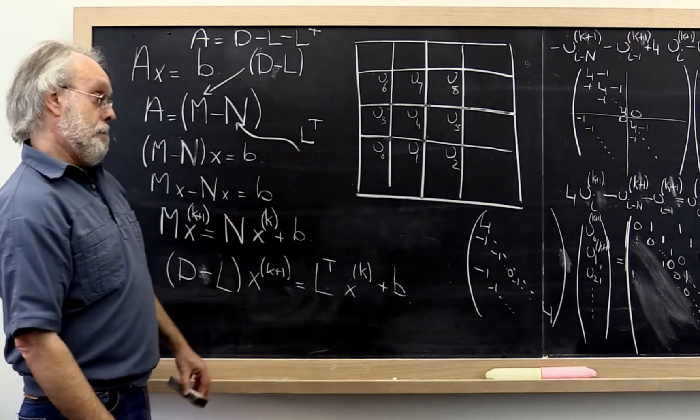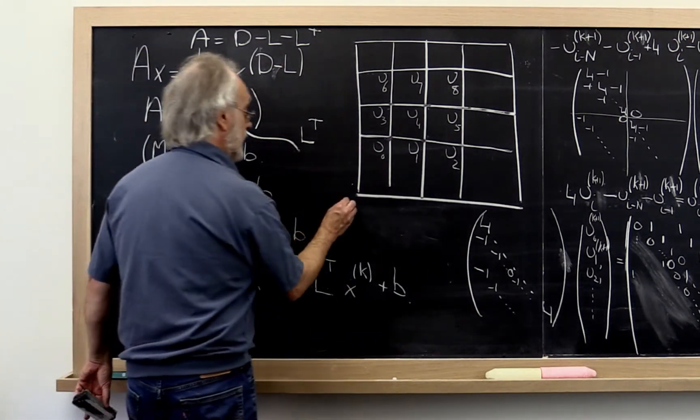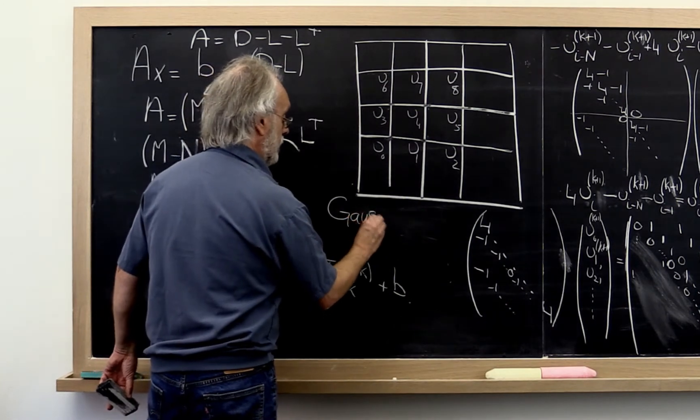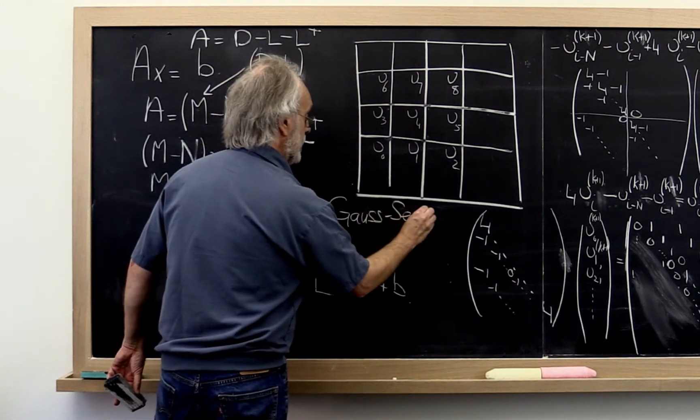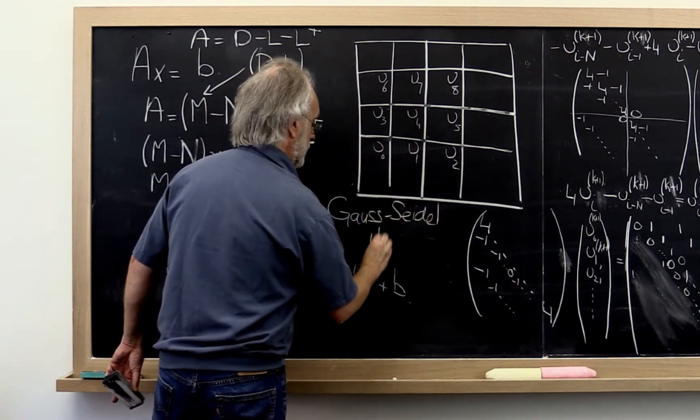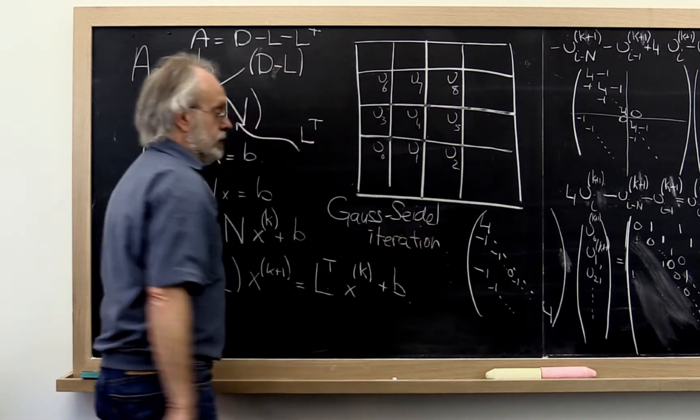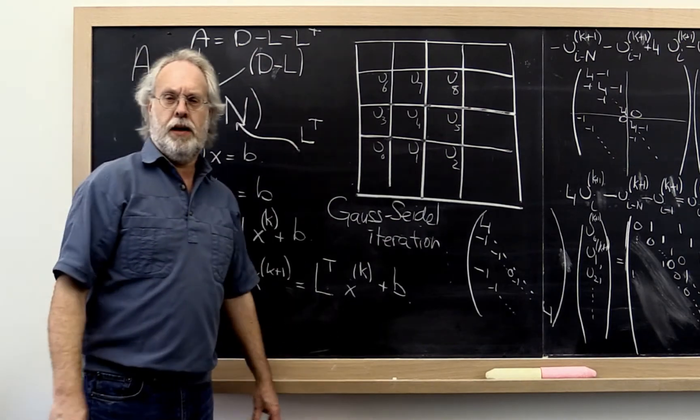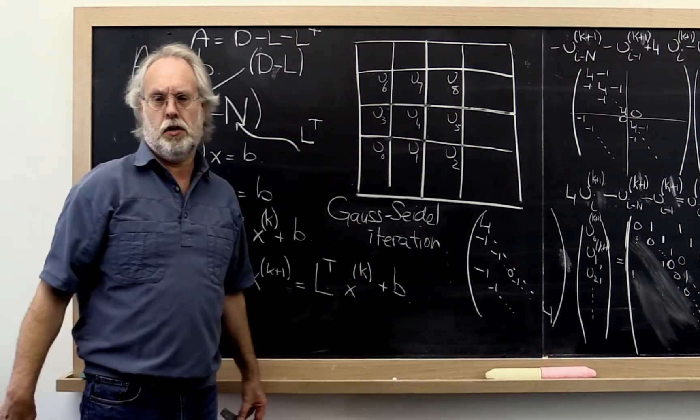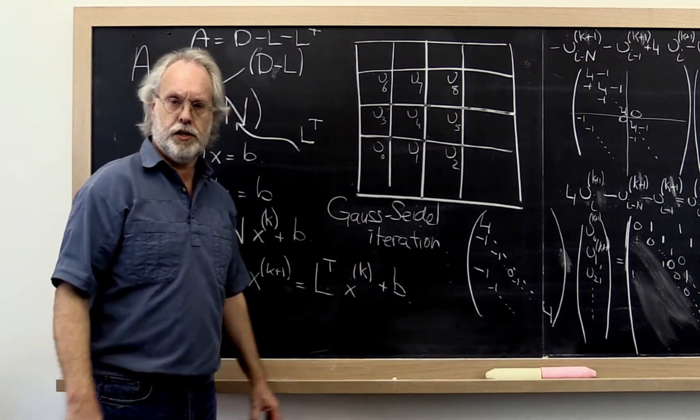Now this particular method is known as the Gauss-Seidel iteration. Jacobi was a very famous mathematician who lived maybe 150 years ago or so.